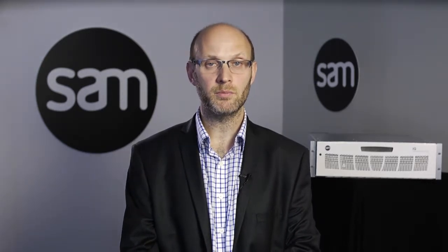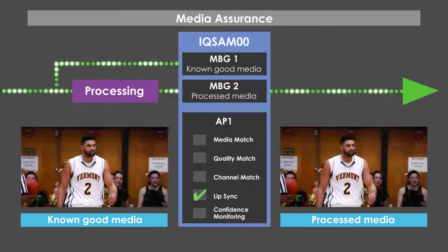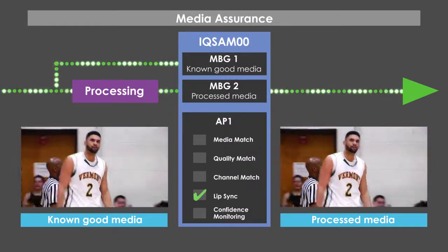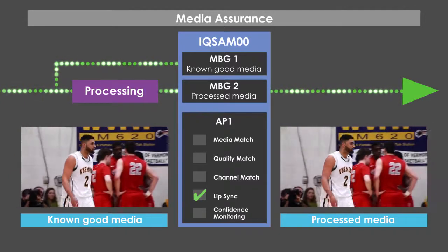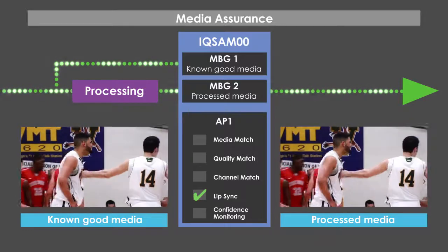There are numerous applications where Media Biometric solutions from SAM can be deployed. One simple example is with detection and correction for lip-sync issues. Two module cards in one rack unit frame represent a cost-effective solution to monitor and fix this issue. In this example, we are using one IQ SAM00 module to compare two local SDI feeds — one of a known good state and another copy that has been through various processes.